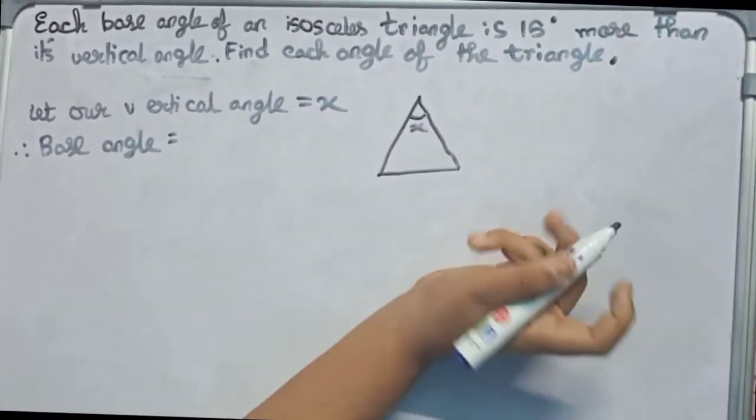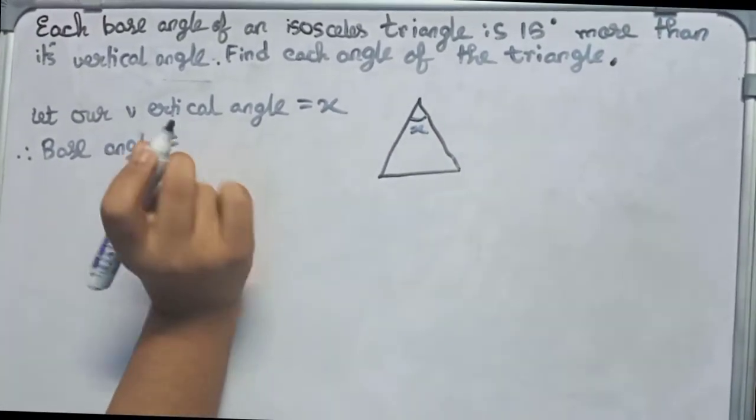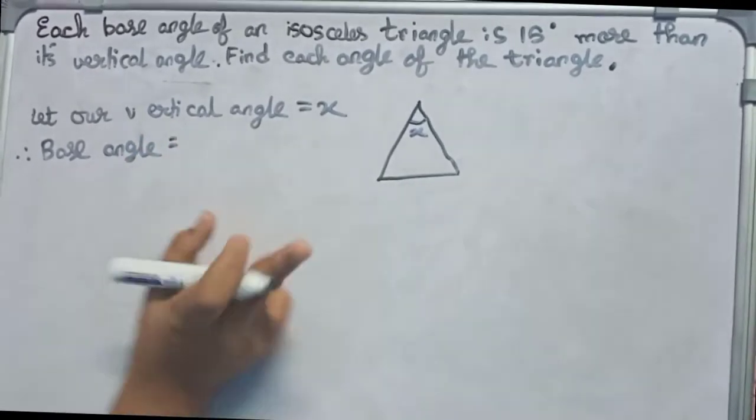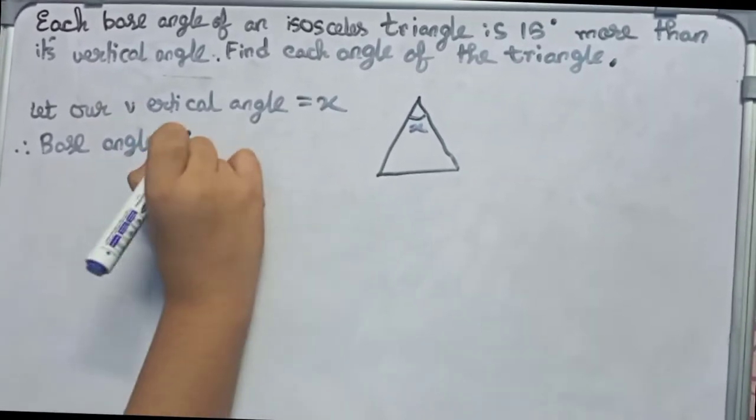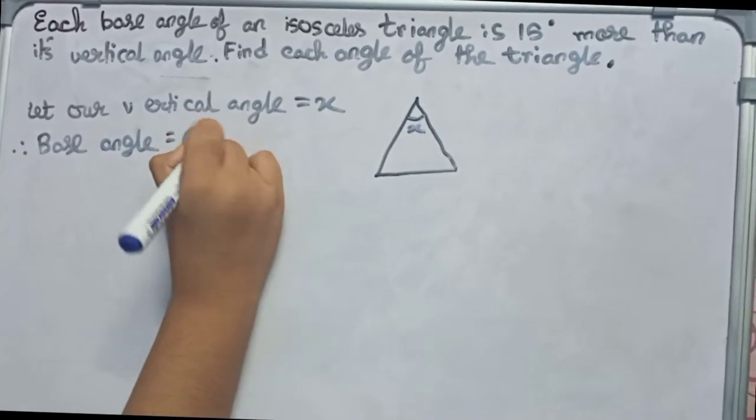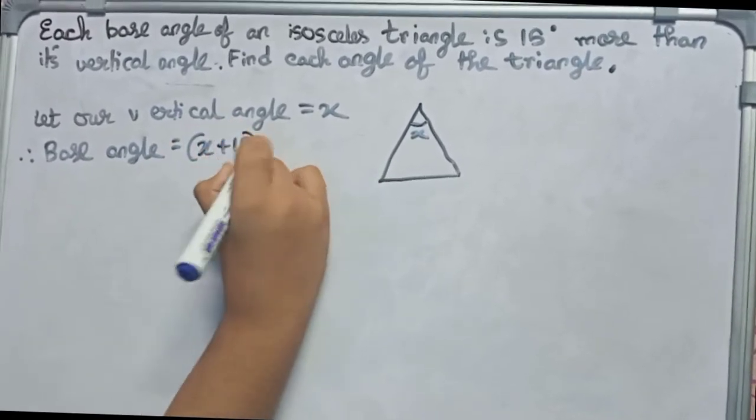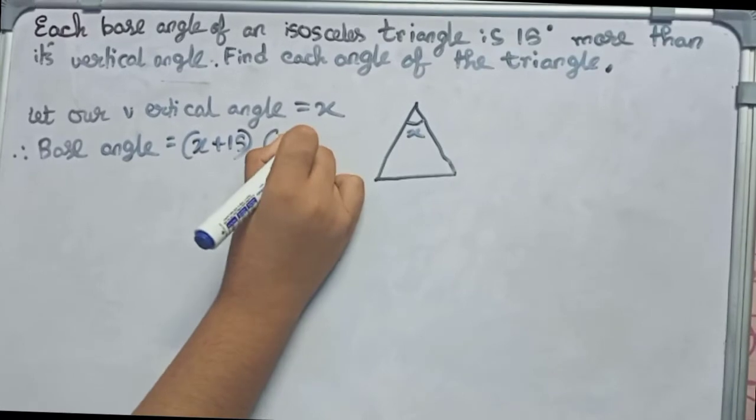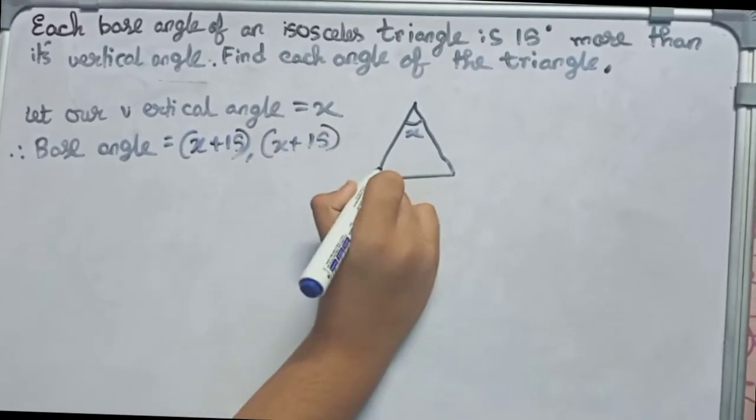Now it is given that a base angle is 15 degrees more than its vertical angle. So it will become x plus 15, x plus 15, as there are two base angles.